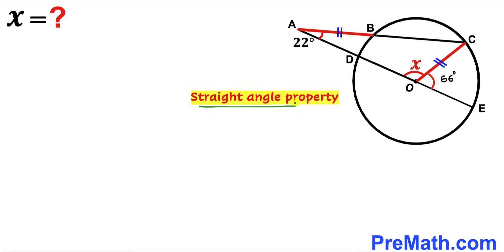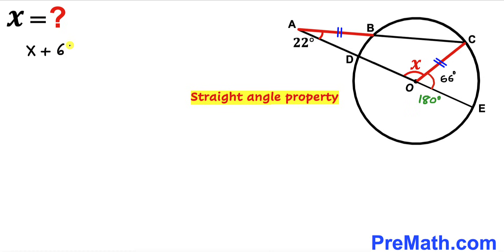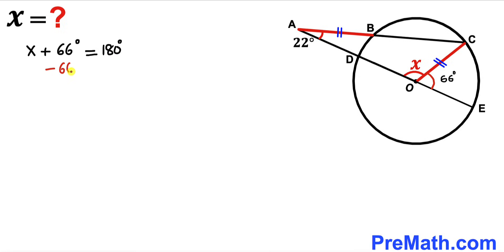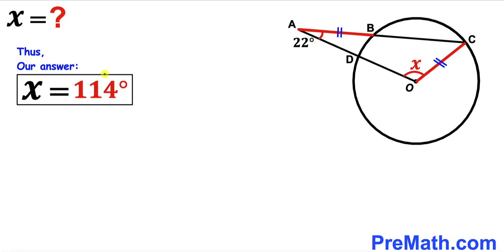Now let's recall the straight angle property. This whole straight angle is 180 degrees. The sum of angles X and 66 degrees must equal 180 degrees. So we write: angle X plus 66 degrees equals 180 degrees. Subtracting 66 degrees from both sides, angle X turns out to be 114 degrees. After all calculations, our angle X value is 114 degrees.